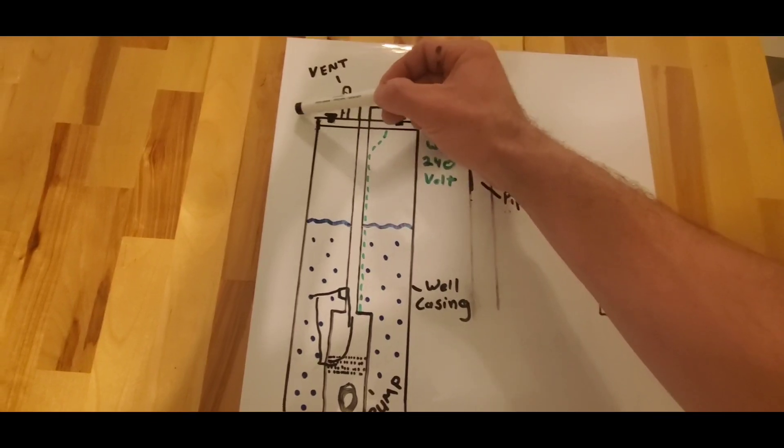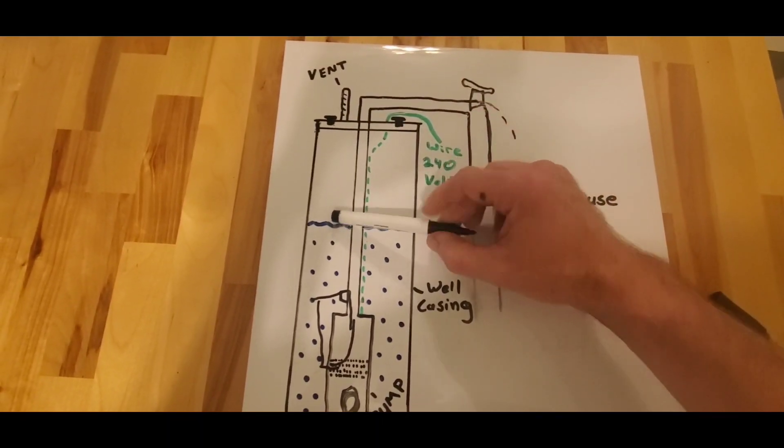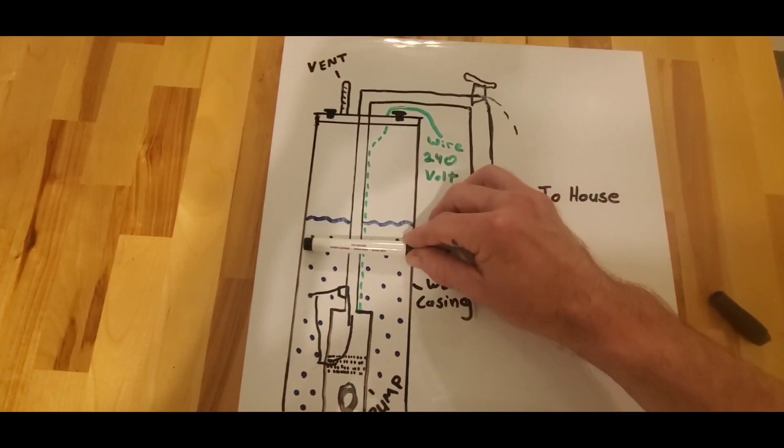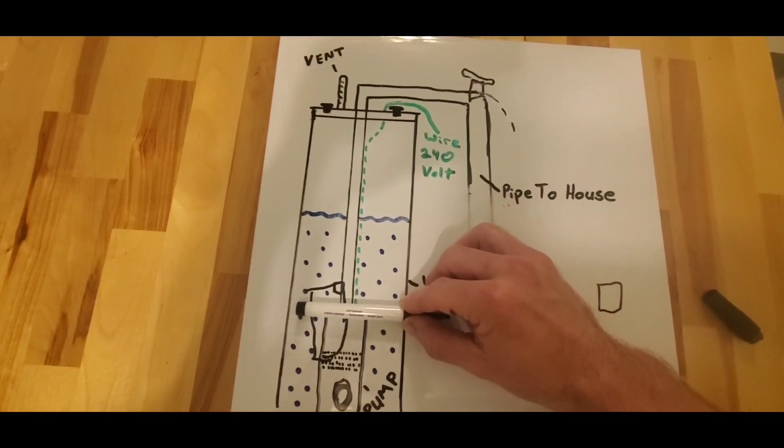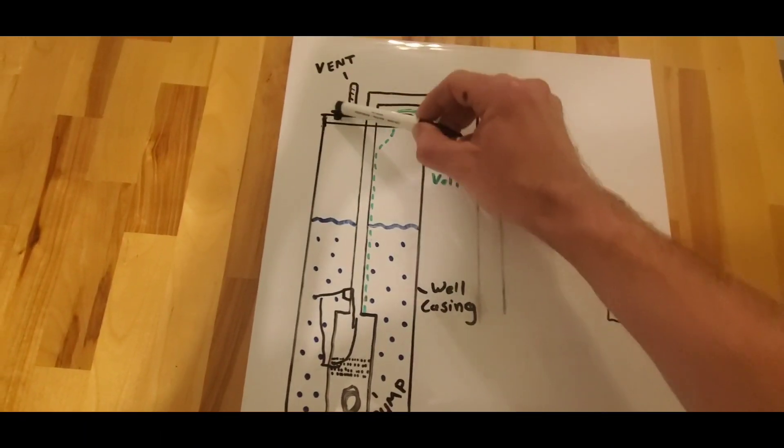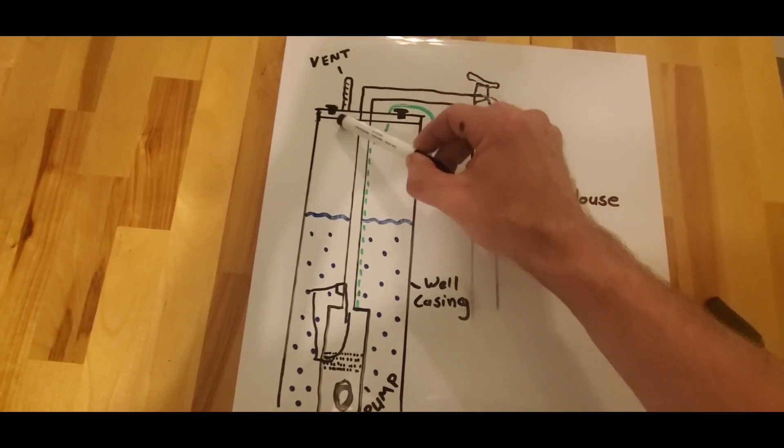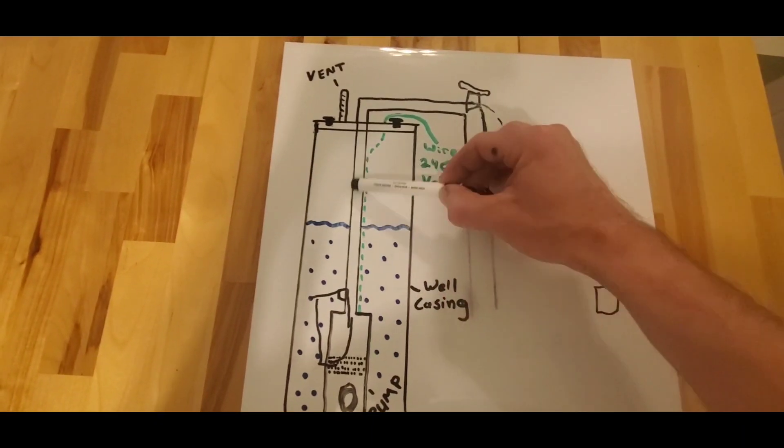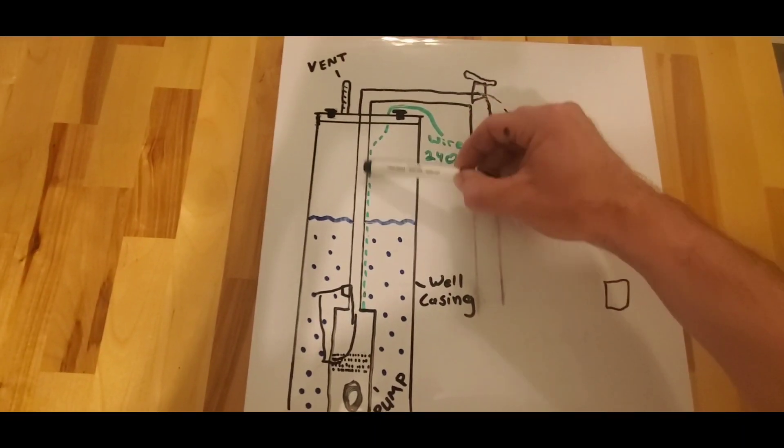So it's zero degrees outside. As you use water, the water level in the well goes down. Well, as the water level in the well goes down, the vent pulls air in. Well, it's pulling in that zero degree or ten degree air and it's freezing the drop pipe down here.